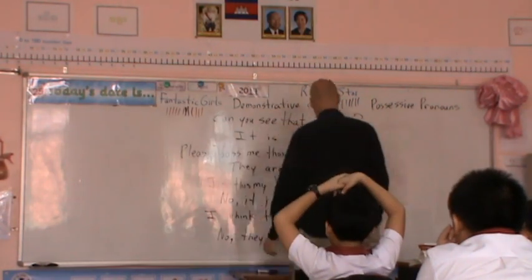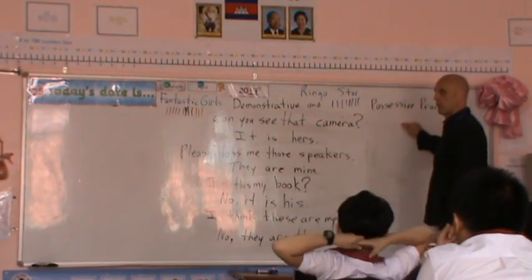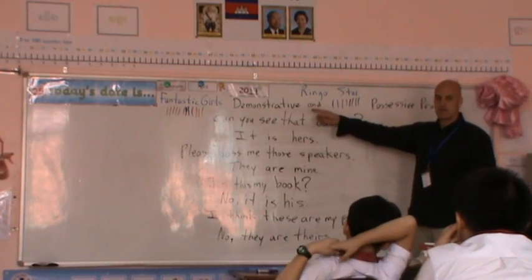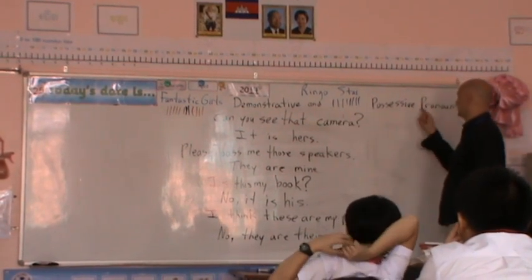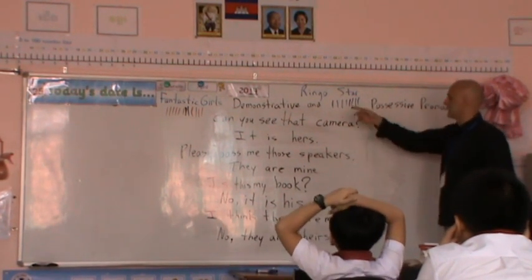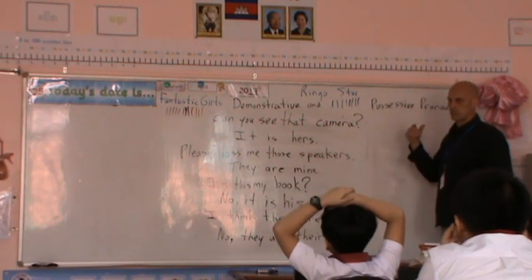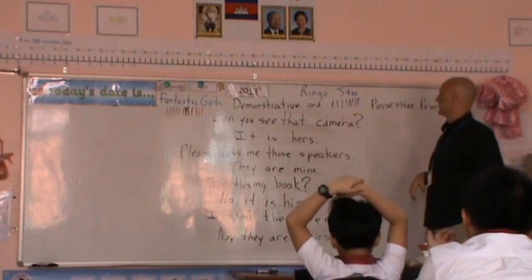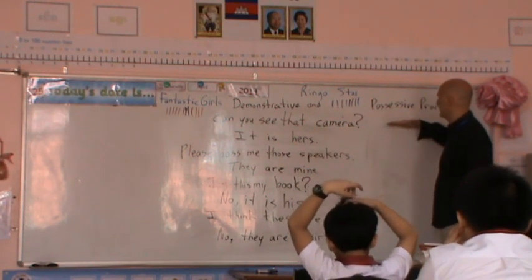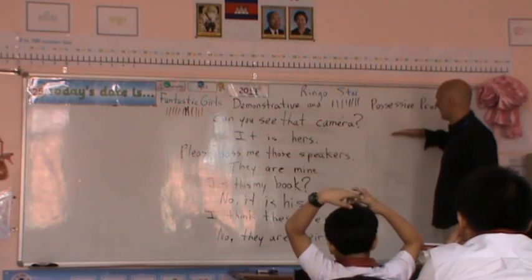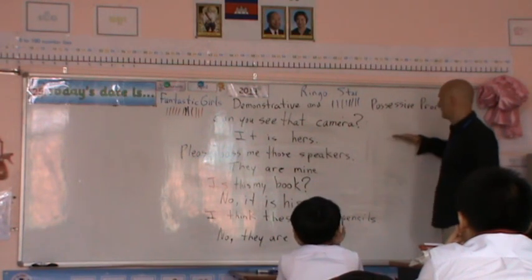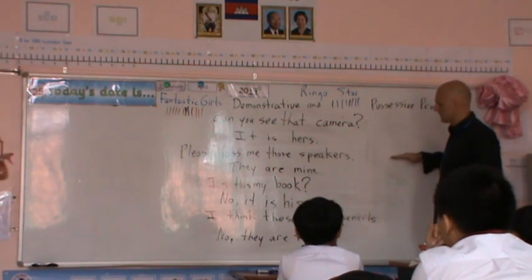There is one answer on each line. Just write the word on each line. There is a demonstrative pronoun or a possessive pronoun on each line — there is one or the other. There's a demonstrative pronoun on one line, a possessive pronoun on another line, and so on. For each line, there is one word — a demonstrative pronoun or a possessive pronoun. Write that pronoun on the board in a row.